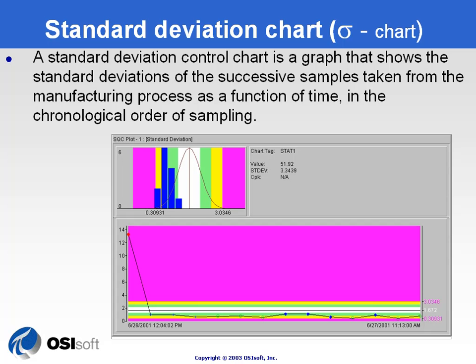The standard deviation chart, or sigma chart, is the third control chart that makes use of fixed sampling. In this case, we're going to take the sigma — the variation, the variance of the sample — given a number of observations.